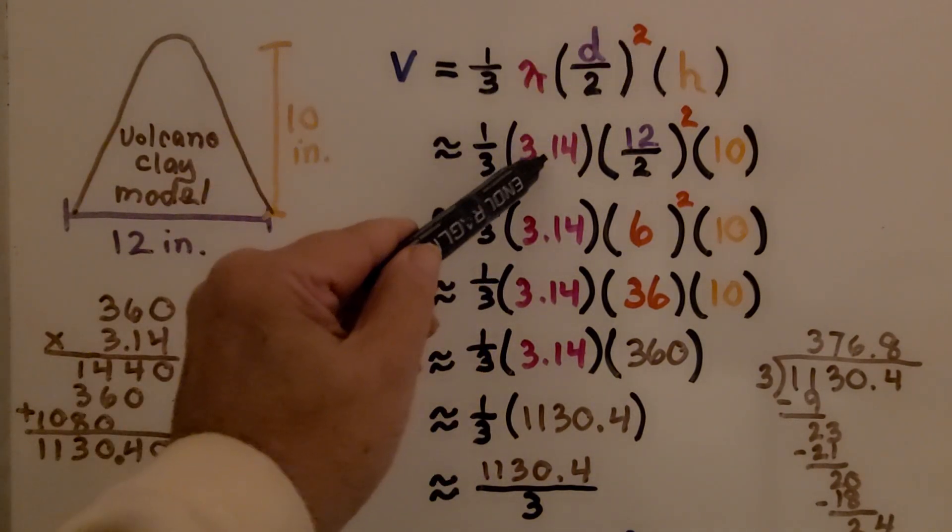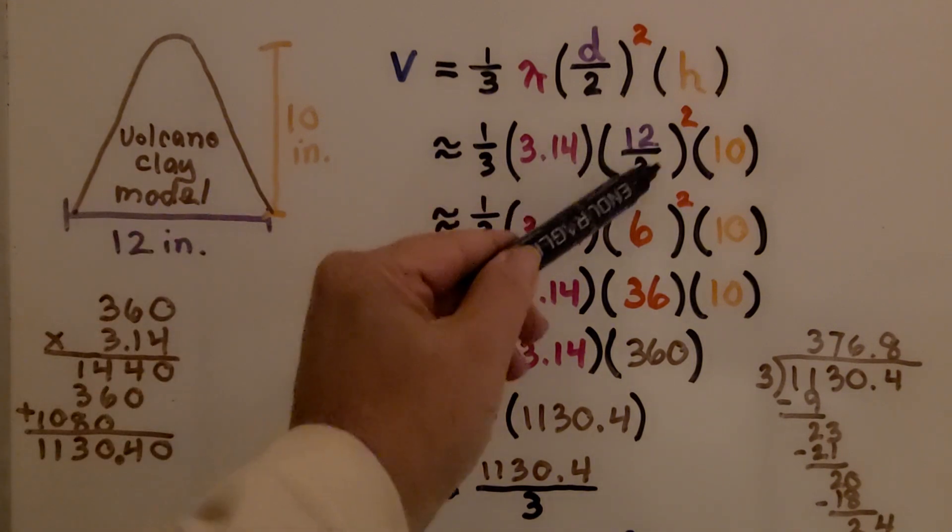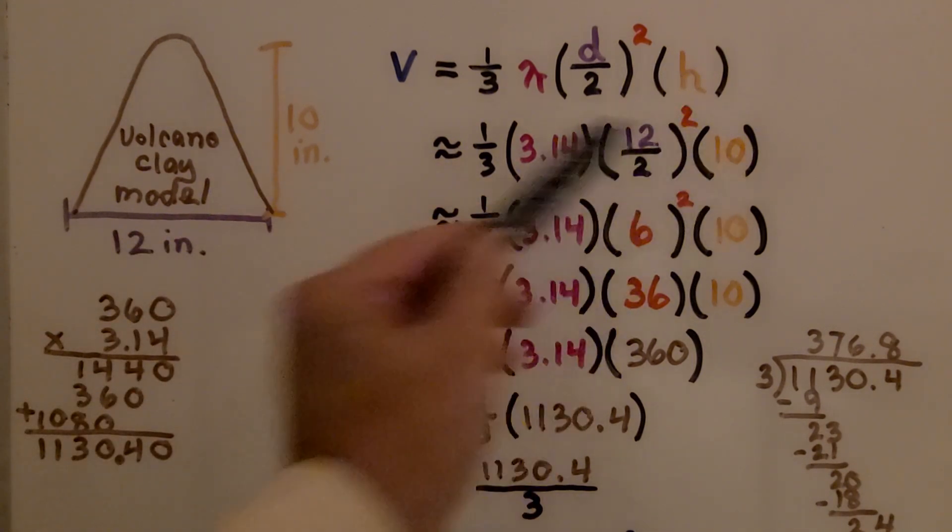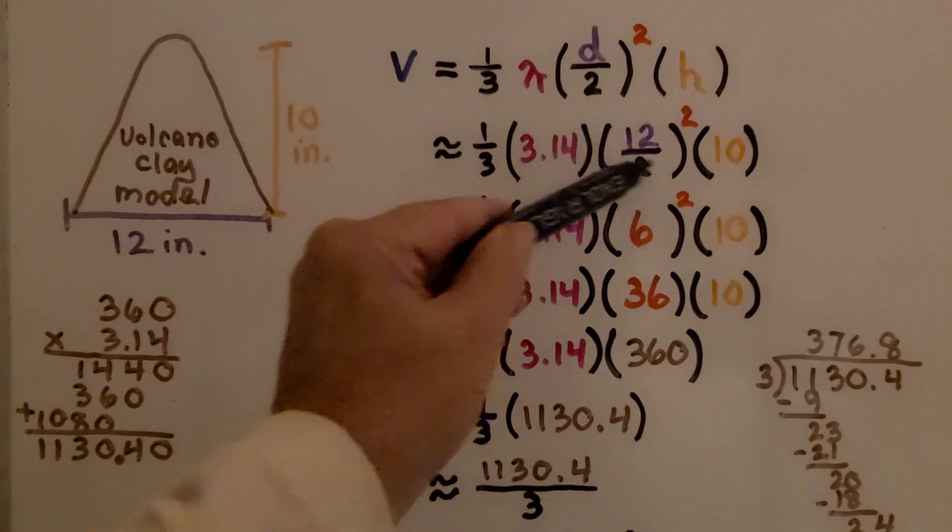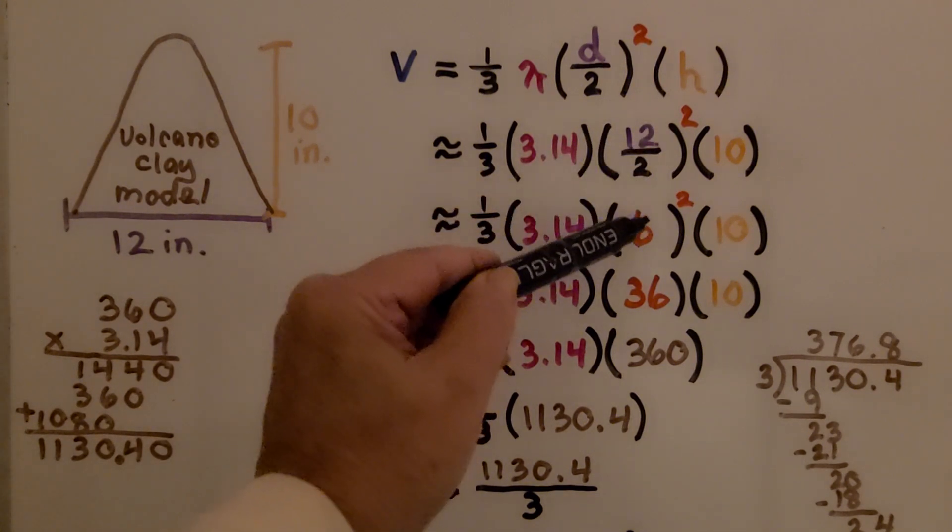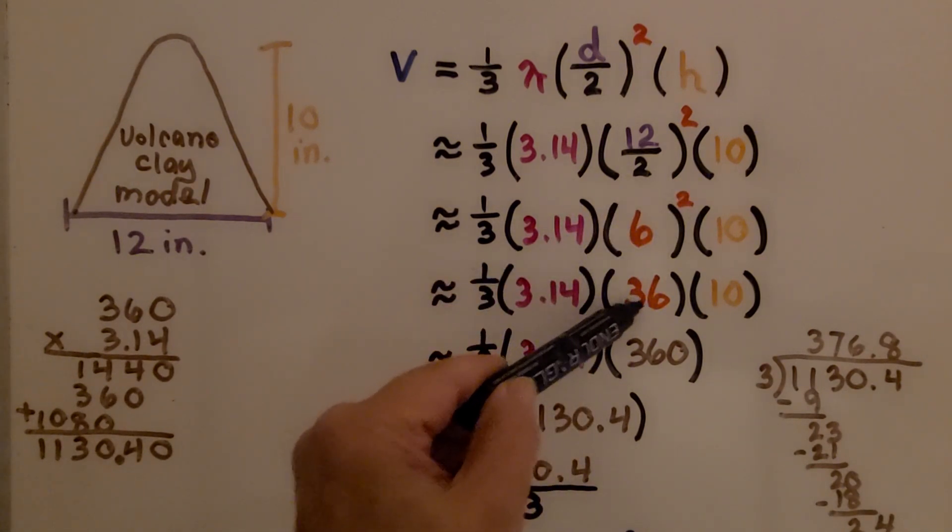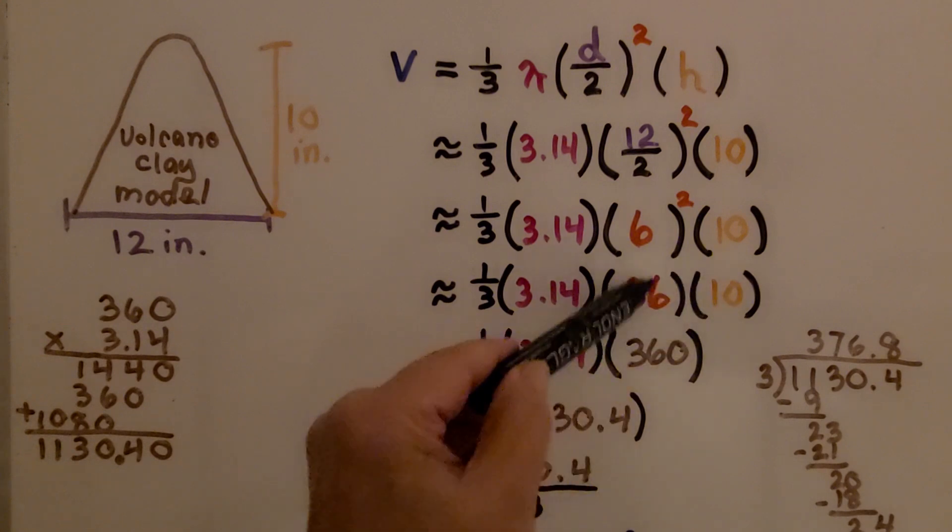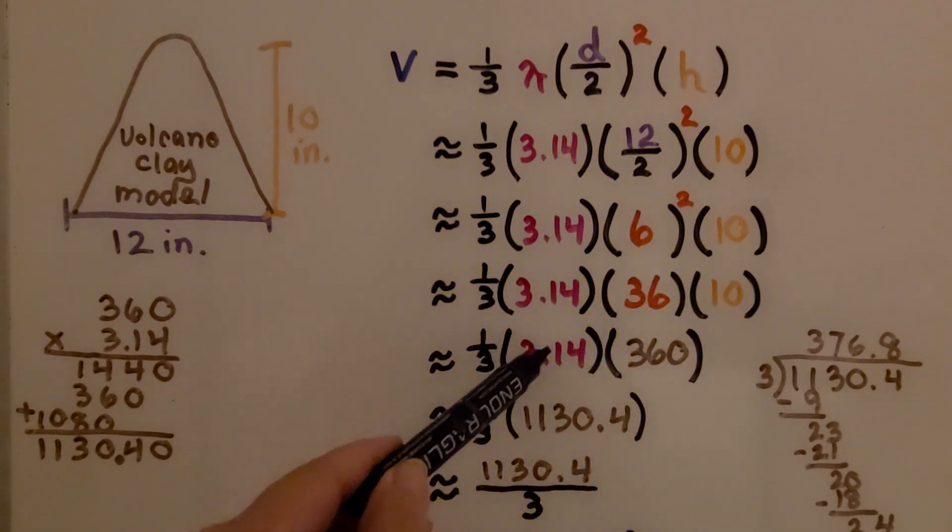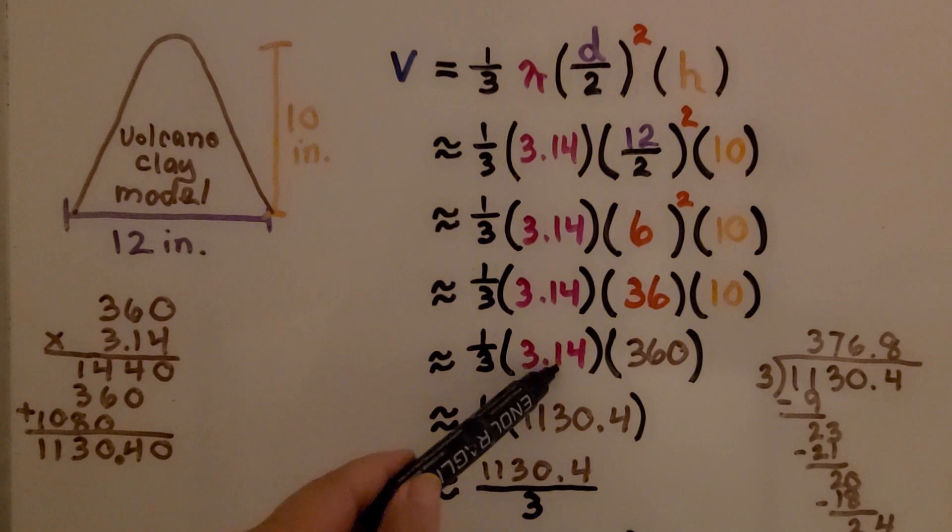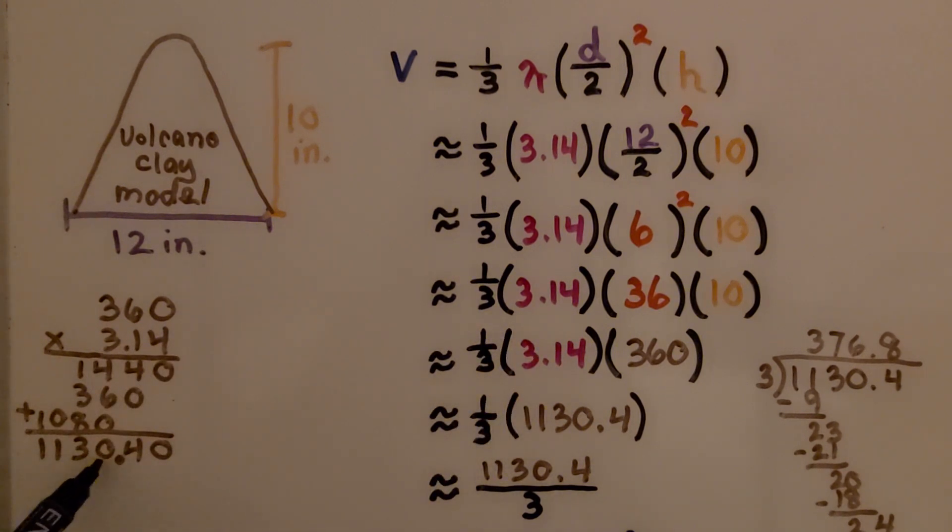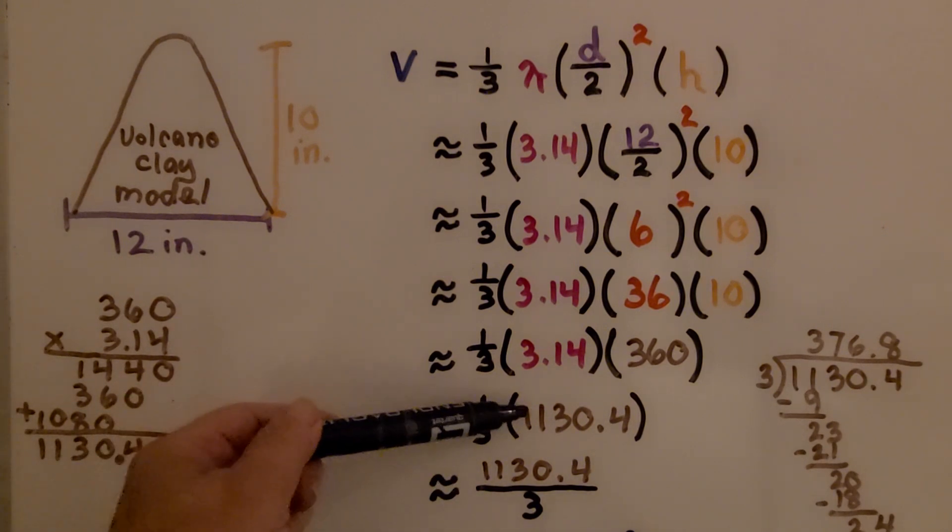We're going to use 3.14 for pi. We know the diameter is 12, so we have 12 divided by 2 squared, and the height is 10. We can simplify this. 12 divided by 2 is 6, so we have 6 squared. 6 times 6 is 36. Now we have 10 times 36, which is 360.